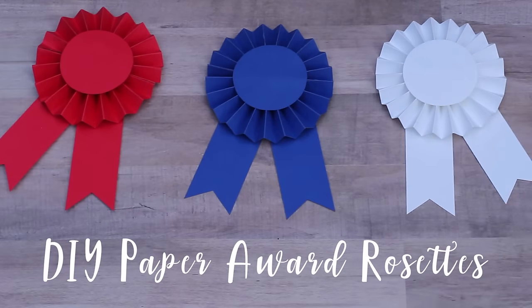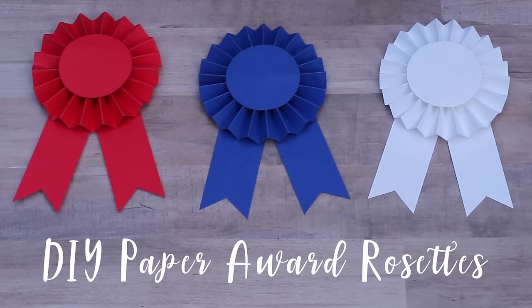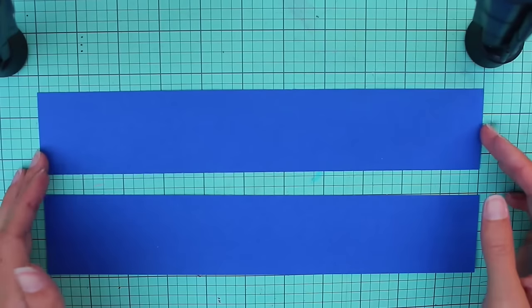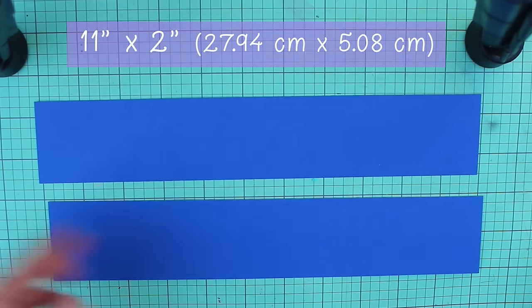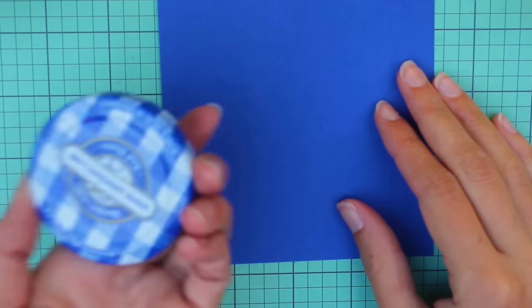Hi everyone, this week we're creating these easy paper award ribbon rosettes. To get started, you'll need to cut two pieces of paper that are each 11 inches wide by 2 inches tall.